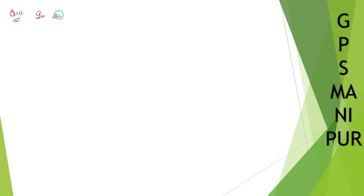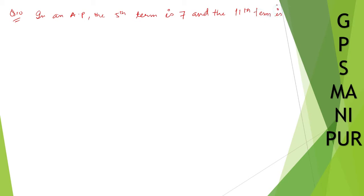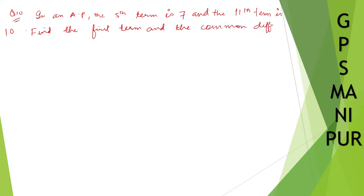In an AP, the fifth term is 7 and the eleventh term is 10. Find the first term and the common difference.